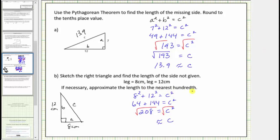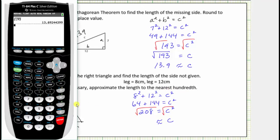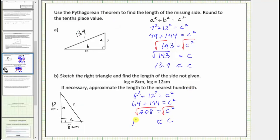We are asked to round to the nearest hundredth, which means two decimal places. We enter the square root of two hundred eight. Notice there's a two in the third decimal place, so we round down — this is approximately fourteen point four two, to the hundredths place value. So because c is approximately fourteen point four two, the length of the hypotenuse is approximately fourteen point four two centimeters.